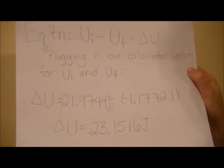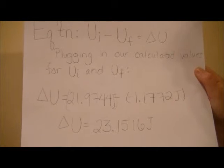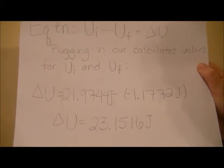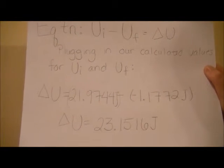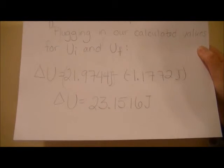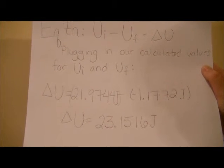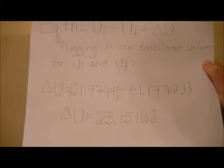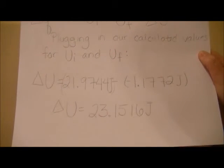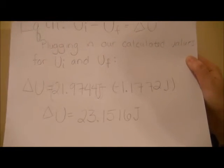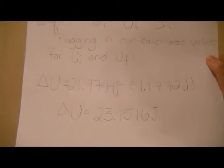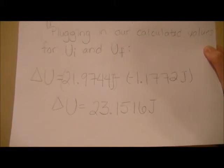Now that we have both final potential energy and initial potential energy, we can solve for the total or delta potential energy. Plugging in our calculated values for final and initial potential energy, we get that delta potential energy is equal to 21.9744 joules minus negative 1.1772 joules. Thus, total potential energy is equal to 23.1516 joules.